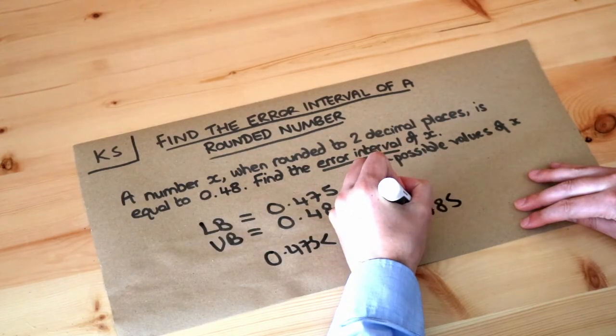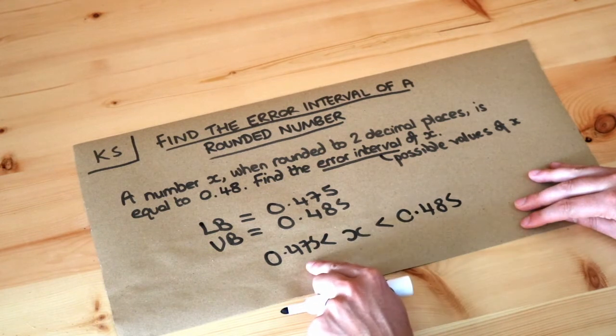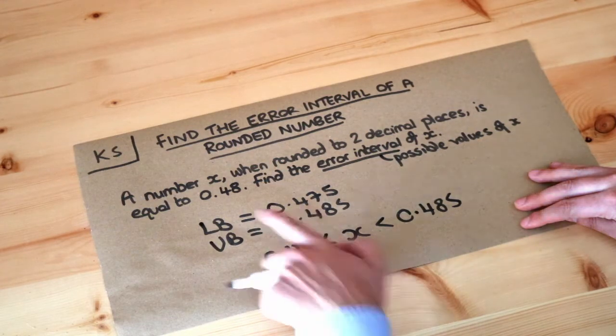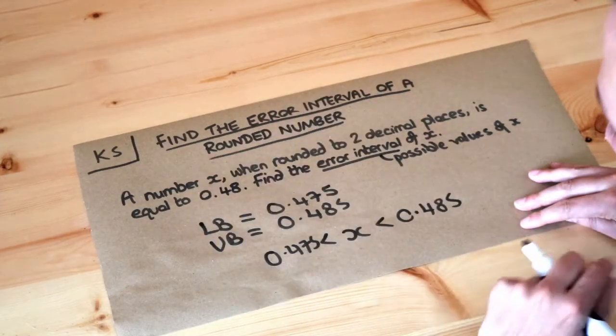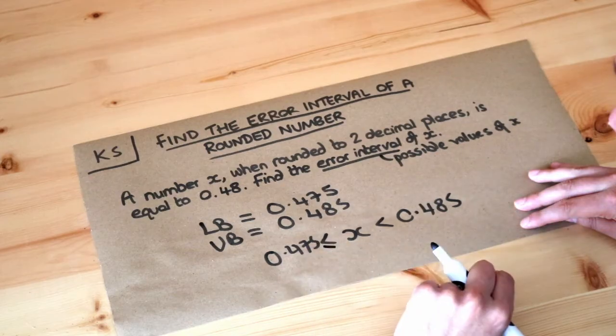Now let's consider the boundaries. Can x be equal to 0.475? Well yes it can because if x was 0.475 it would round to 0.48 to two decimal places. So x could be that value. Therefore x is greater or equal to 0.475.